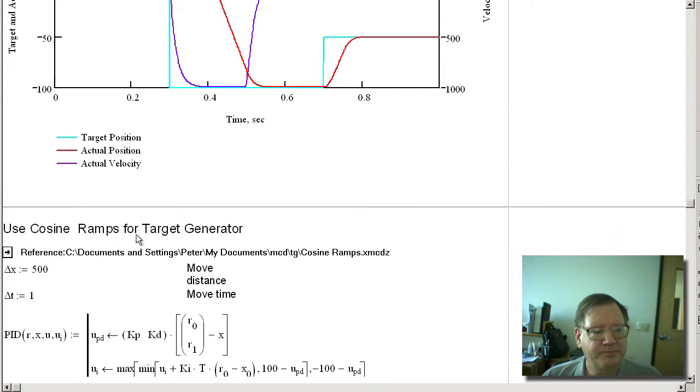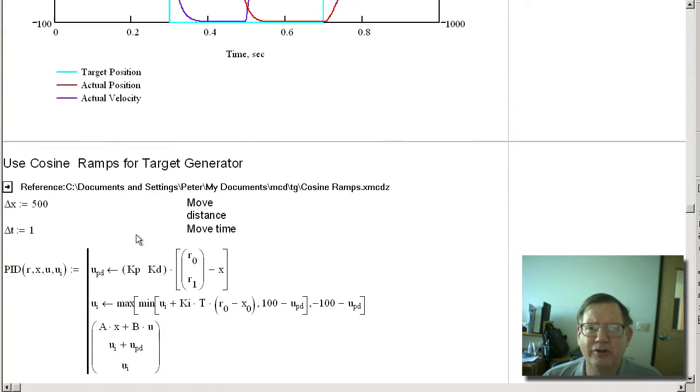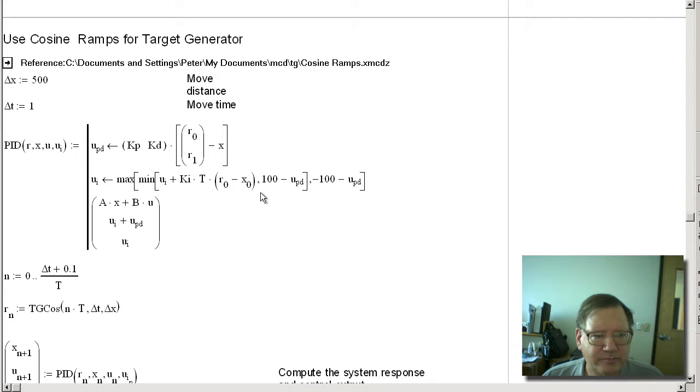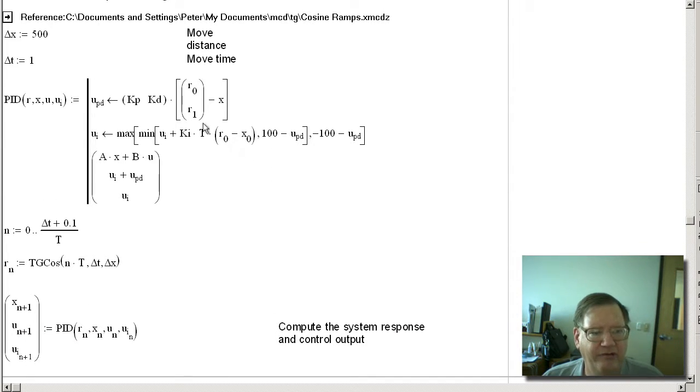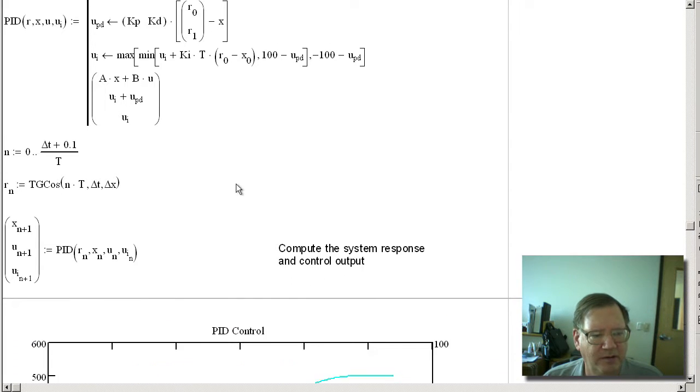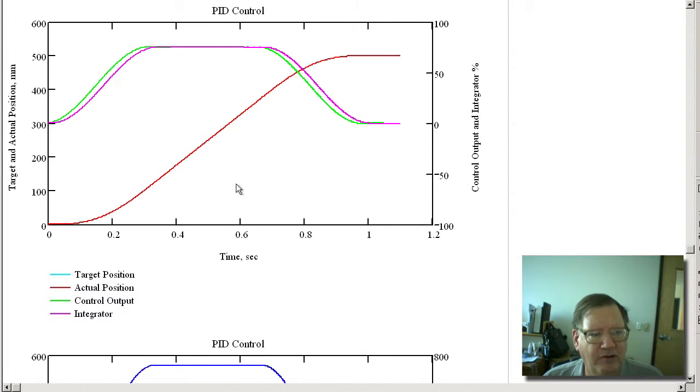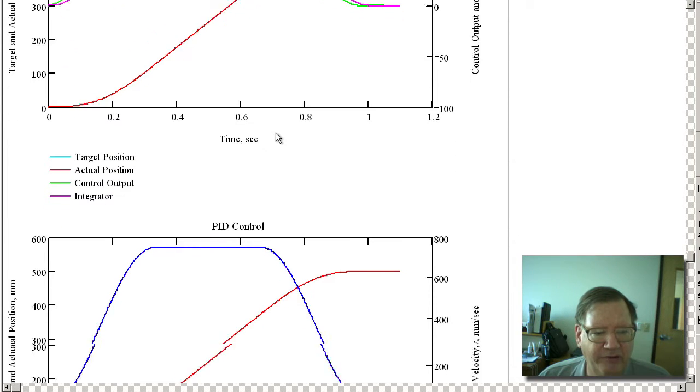Now I'm going to make a more useful type of move. I'm going to do a move from 0 to 500 millimeters using cosine ramps. And this is the PID, pretty much like what you saw before. And here is the nice cosine ramps. And you can see the integrator is lagging a little bit. The control output and the position. And you can see the target and actual position are one line, or they look like one line. So they're tracking very, very close.